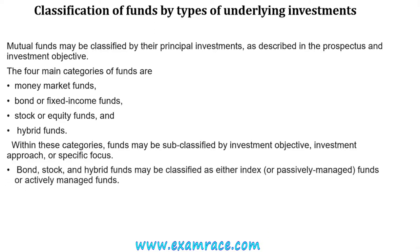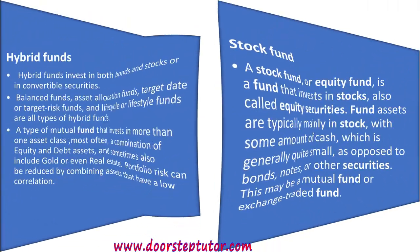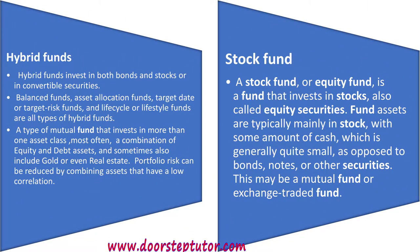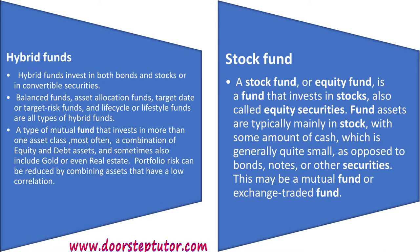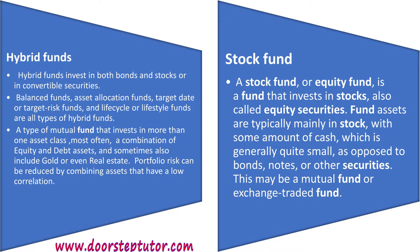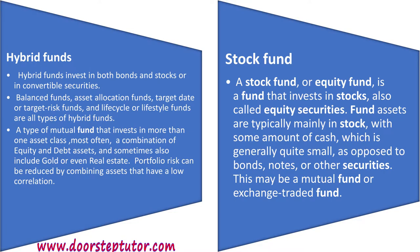Bond, stock, and hybrid funds may be classified as either index (passively managed) funds or actively managed funds. Hybrid funds are funds which invest both in bonds and securities or in convertible securities. Types include balance funds, asset allocation funds, target date or target risk funds, and life cycle or lifestyle funds. A hybrid mutual fund invests in more than one asset class — most often a combination of equity and debt, and sometimes also gold or even real estate. Portfolio risk can be reduced by combining assets that have a low correlation, which greatly helps reduce your portfolio risk.